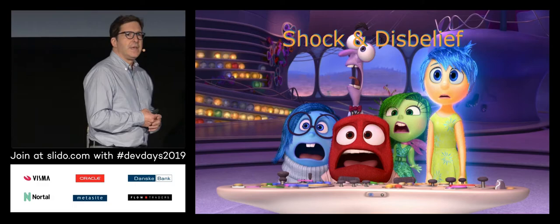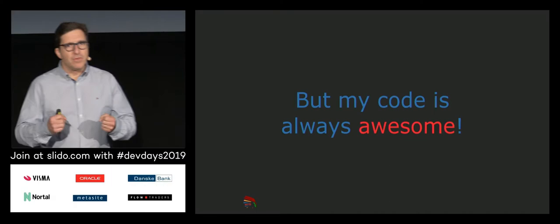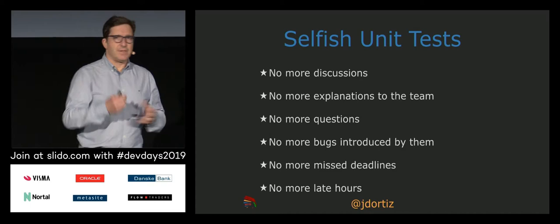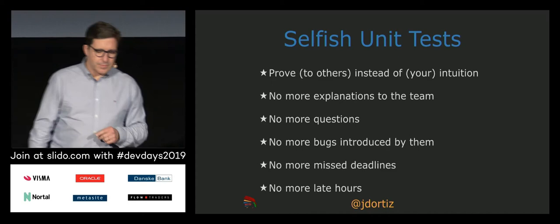The first stage is usually shock and disbelief. By that I mean that probably you have asked yourself, come on, I write awesome code — why do I need to write code again to test and to prove that it is right? Well, I would suggest you to take it as a selfish exercise. Don't do it for others, do it for yourself. And instead of having discussions with your colleagues, with your team, you will have the proof that your code is right and not just your intuition.